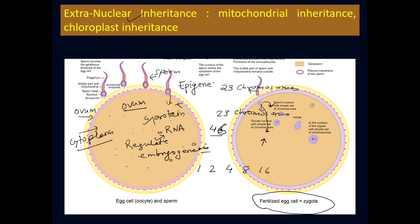This information present on the maternal side is part of a very important and comparatively new field called epigenetics. Epigenetics is very important for cloning. If someone is cloning certain cattle or animals, this epigenetic program is critical — if it is not done properly, the cloning experiment fails.